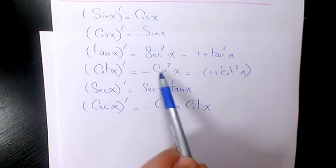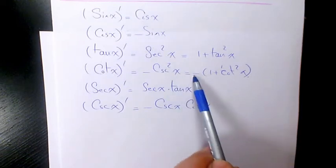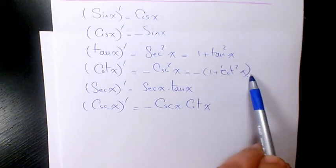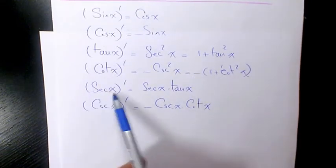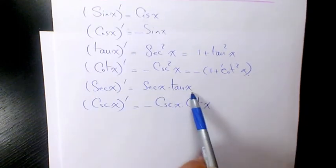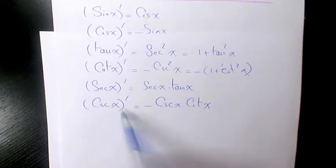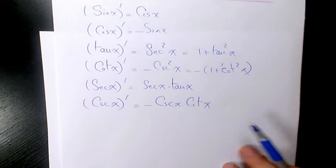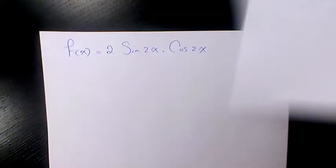Derivative of cotangent x is negative cosecant squared x or negative times 1 plus cotangent squared x. Derivative of secant x is secant times tan x, derivative of cosecant x is negative cosecant times cotangent x.